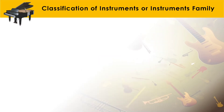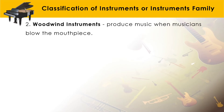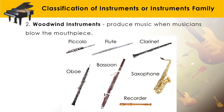The second family is woodwind instruments. These produce music when musicians blow into the mouthpiece. Examples of woodwind instruments include the piccolo, flute, clarinet, oboe, bassoon, saxophone, and recorder.